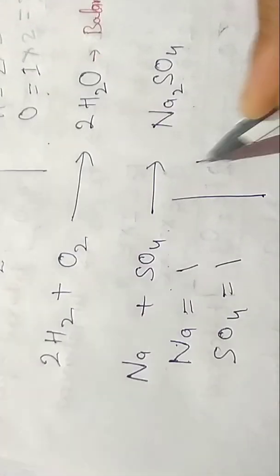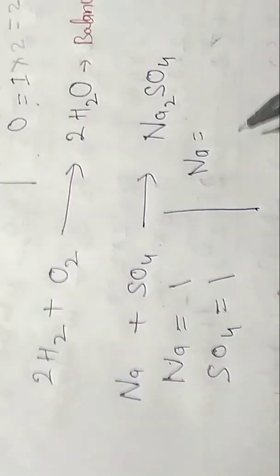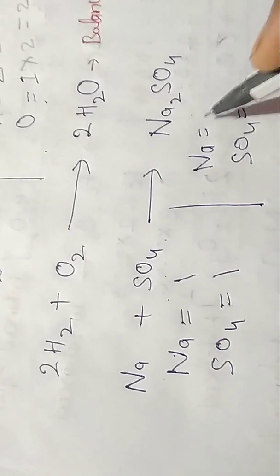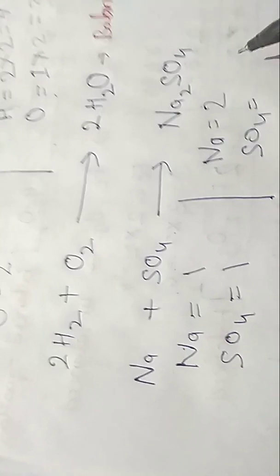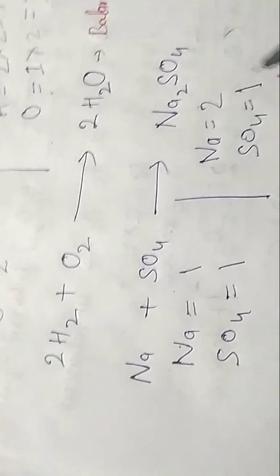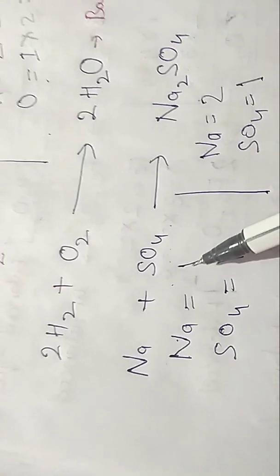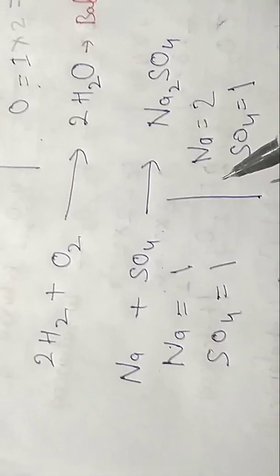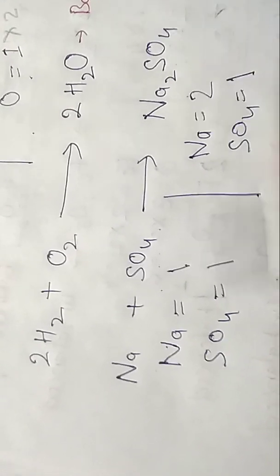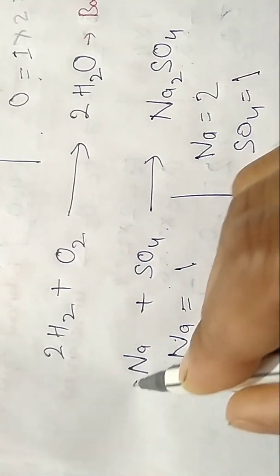In the right side, Na and SO4: Na is two and SO4 is one. So this is unbalanced because Na is two here and Na is one here. So to balance it, we have to put 2 here.